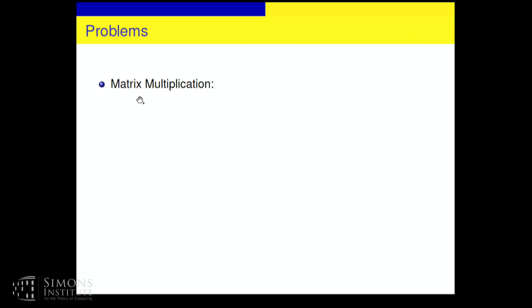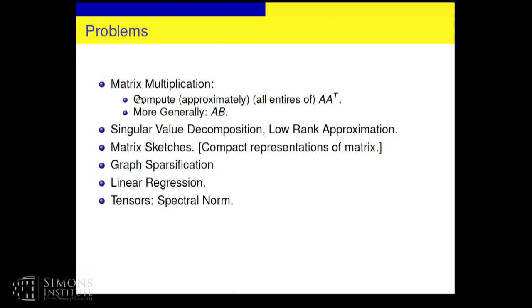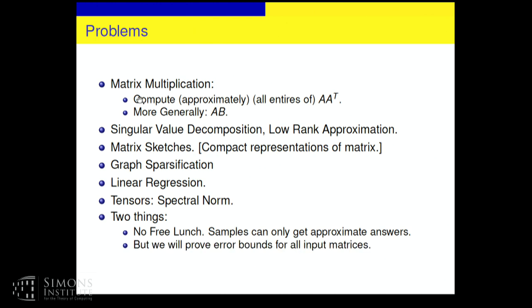So the problems that we will talk about, maybe I won't get to all of them, but matrix multiplication, just multiplying two matrices. In particular, even A transpose A is interesting, or generally two different matrices, singular value decomposition, low rank approximation. Matrix sketches where you can represent a matrix in smaller amount of space. This is, again, as was talked about, CUR decomposition. I'll get to that. Graph sparsification is a 10-year-old result of Spielman and Srivastava, which is beautiful, which actually depends on length squared sampling, as we'll see. Linear regression. Finally, I want to talk about tensors where perhaps there are open questions that people haven't tried to use quantum things to, and maybe that's possible.